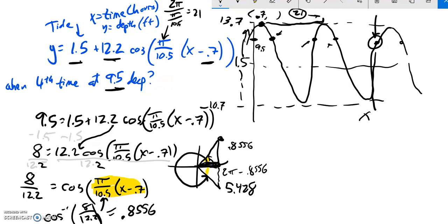So inverse cosine is equal to that. But if I go cosine of this or of this, then I'll get 8 over 12.2. A little bit off because I rounded. So this part that's highlighted is either going to be that value or that value. So I really have two cases.